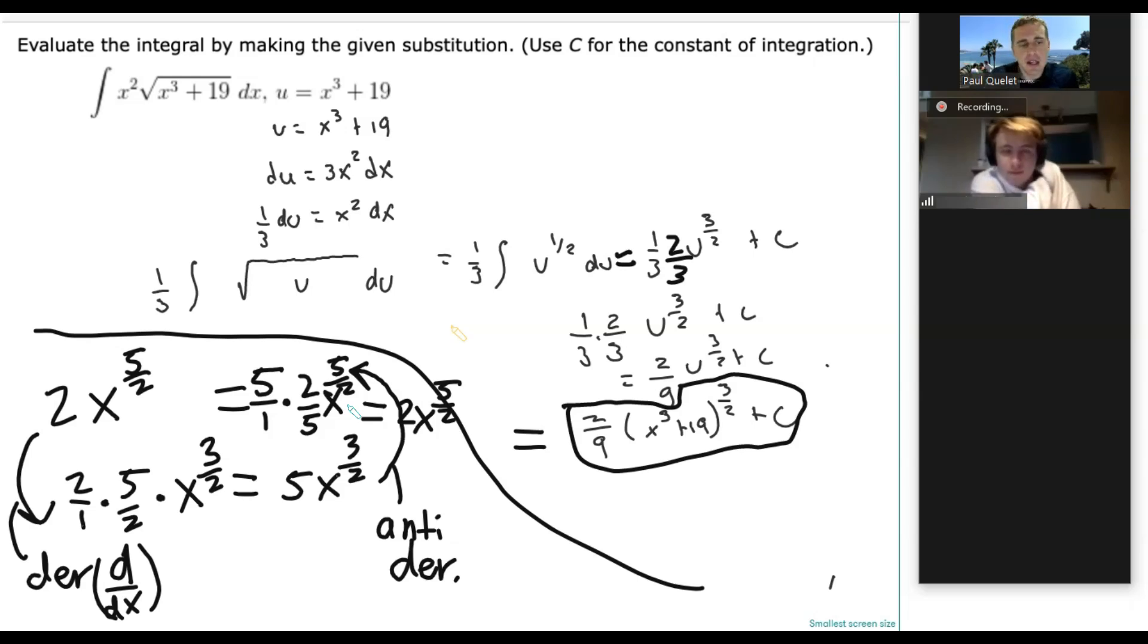Here we're doing exponent times coefficient first, then one less the power. The other way around, we're doing one power higher first, then multiply by the reciprocal of the new power. So just keep that pattern in mind.